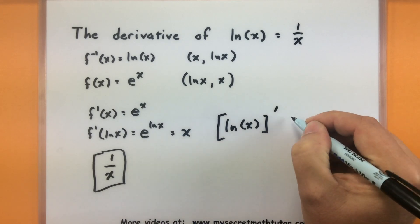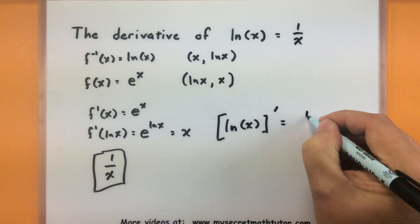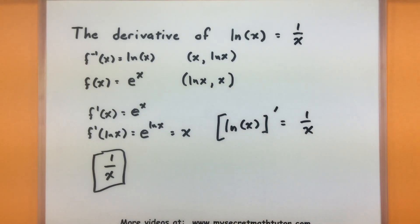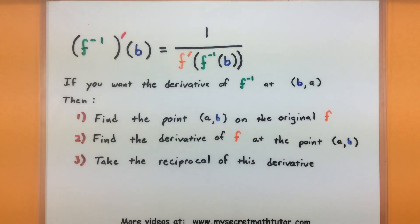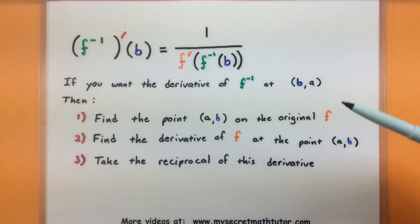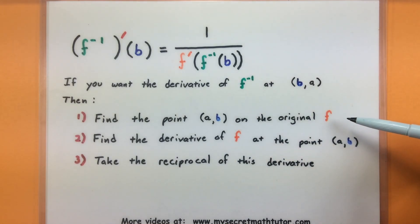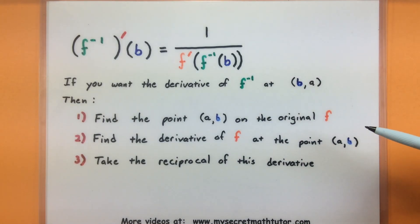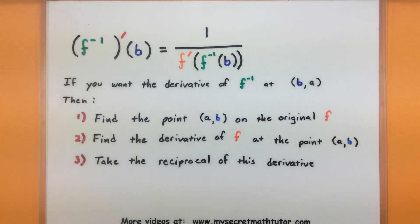So when you see the formula for the derivative of an inverse, the key to understanding it is really thinking about what is happening with the original function. You'll see this for inverse trigonometric functions, and it works for the natural log. The idea is: find the point on the original function, find what that original function is, find the derivative of the original function — which is usually a little bit easier — and take the reciprocal of that derivative, and you're in business. If you'd like to see more videos, please visit MySecretMathTutor.com.